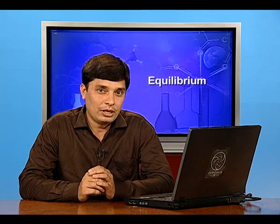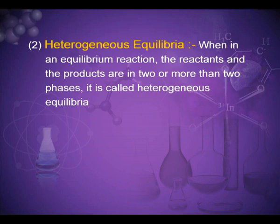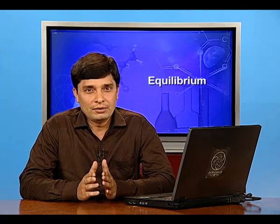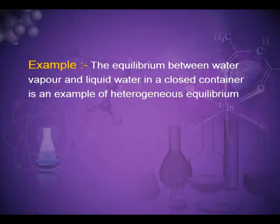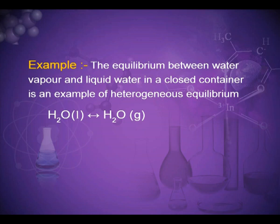The second type of equilibrium is heterogeneous equilibrium. When in an equilibrium reaction the reactants and products are in two or more different phases, it is called heterogeneous equilibrium. For example, the equilibrium between water vapor and liquid water in a closed container — water in liquid form transforms to gaseous form, so two different phases are present.